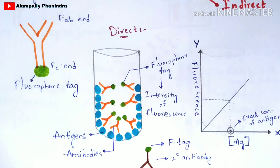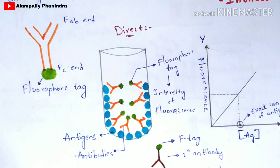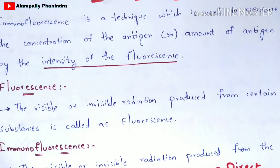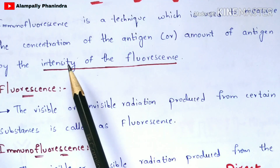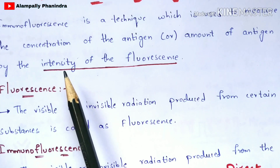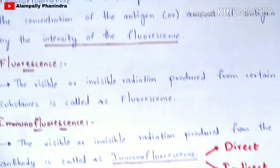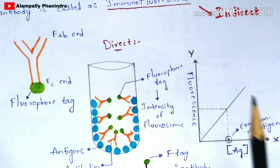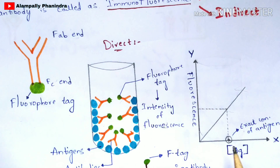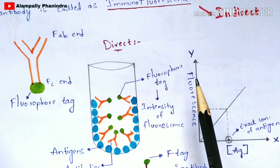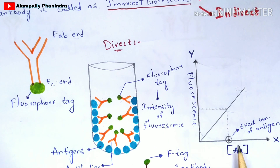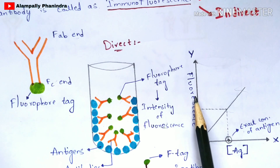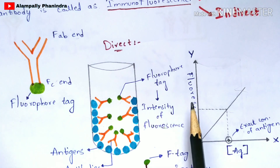This is the main aim of the immunofluorescence technique — to find the concentration of the antigen by the intensity of the fluorescence. For the graph: on the x-axis you take the antigen concentration, and on the y-axis you take the intensity of the fluorescence — the values obtained by the spectrophotometer.